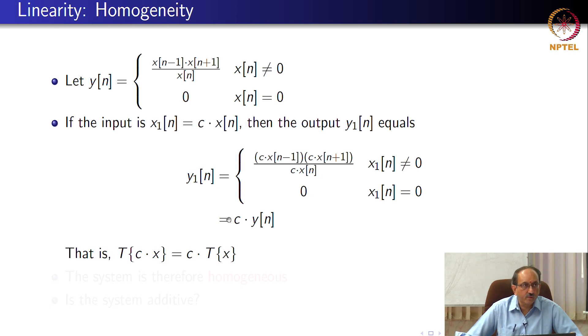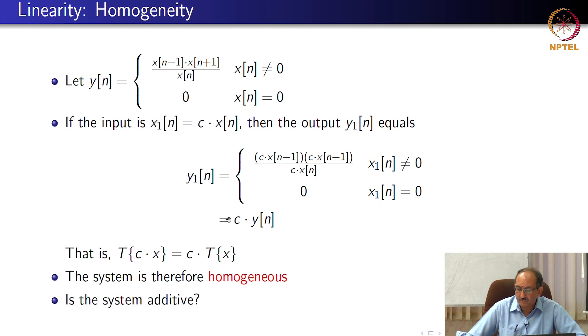So, clearly this system is homogeneous, and one look at the definition, you can see that the system, in terms of additivity, is the system additive or not? What can you say about the system's behavior when you add two signals? It is not, because you see x[n-1] times x[n+1], you have a product there, you will have cross terms. So, this system which is homogeneous, very easy to see that this is not additive.